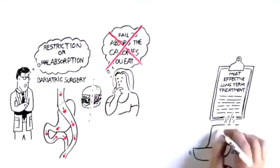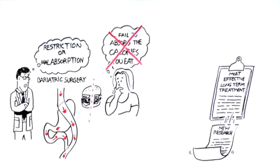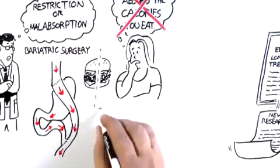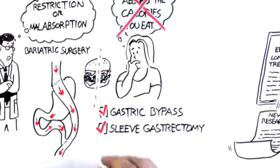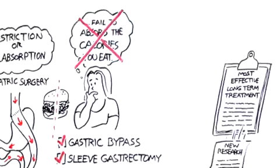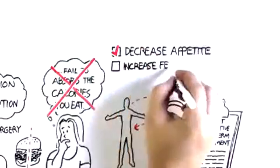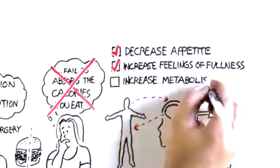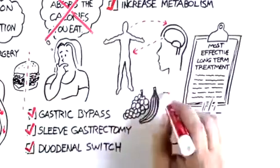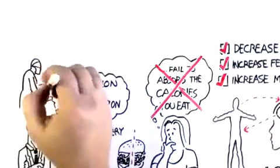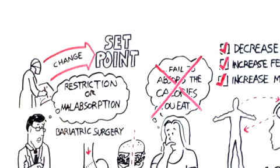But new research suggests that certain types of bariatric surgery, for example, gastric bypass, sleeve gastrectomy, and duodenal switch, affect the signals between the brain and the body to decrease appetite, increase feelings of fullness, increase metabolism, and even encourage preferences for healthier food. Surgery may change the set point for body fat.